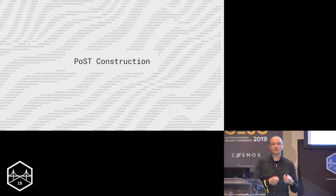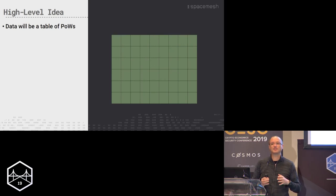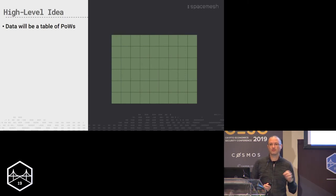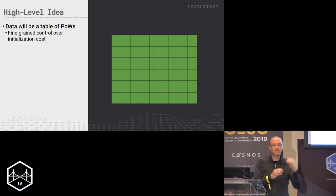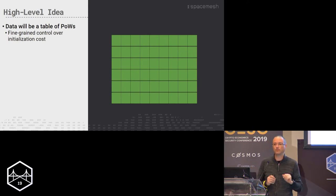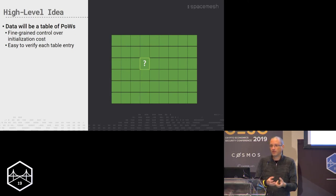Now let's get to the construction — how do we actually build our proof of space-time? The high-level idea: what we're going to use as our data is a table composed of proofs of work. Each cell in the table is a proof of work, the same as used for Bitcoin or Ethereum. This gives us very fine-grained control over the initialization cost, because proofs of work let us change the difficulty in very small increments — we can say exactly how hard each cell is to fill. It's also very easy to verify a single table entry: we just ask for the proof of work, and proof of work is easy to verify.